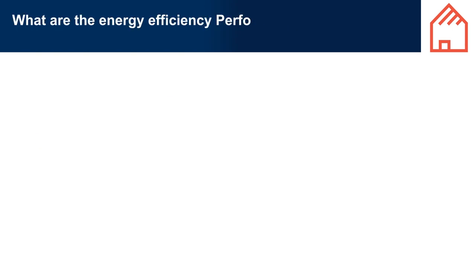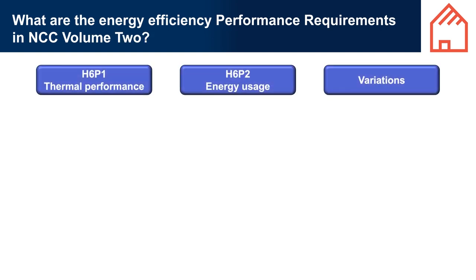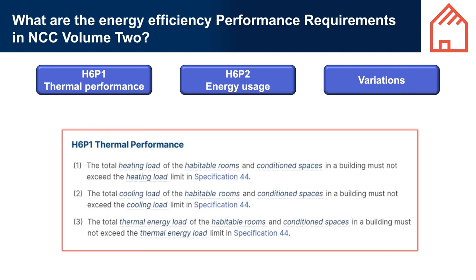The key objective of the NCC Volume 2 energy efficiency provisions is to reduce the greenhouse gas emissions that a building produces over its lifetime. An additional benefit is that an energy efficient home can be more comfortable to live in and cheaper to operate. The provisions address two aspects: the thermal performance of the building envelope — the ease with which heat flows into and out of the building — and improving the thermal performance of the building fabric to reduce the need for artificial heating and cooling, which are key contributors to total energy use in a typical Australian home.